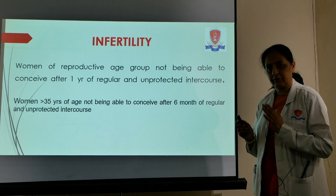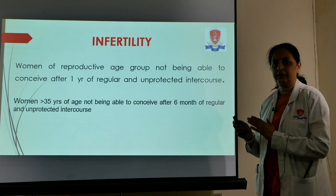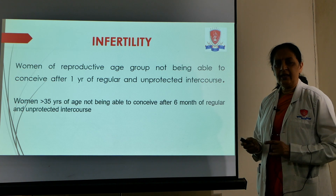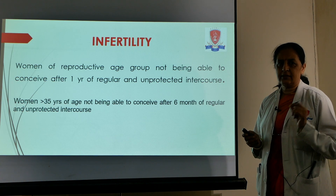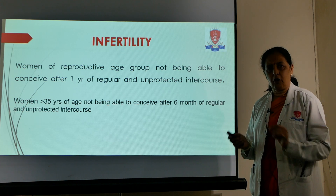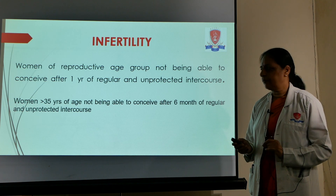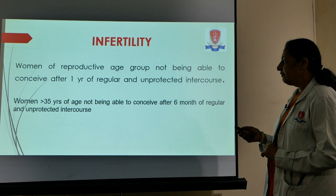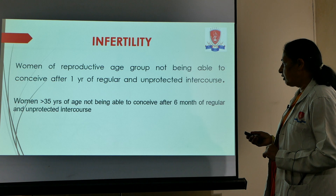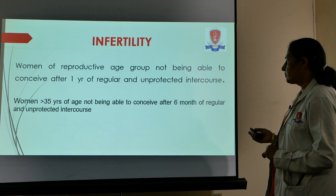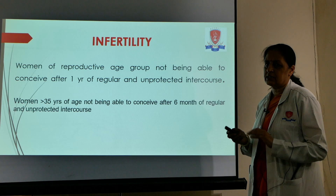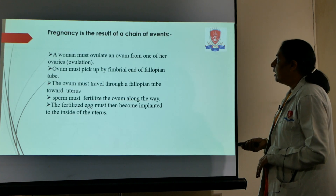The remaining one-third are due to both factors combined, and 10% remain where both partners are normal but it is an idiopathic type of infertility. If the woman's age is beyond 35 years and she has not been able to conceive even after six months of regular unprotected intercourse, we can start her investigations.